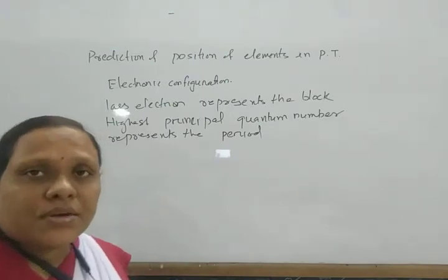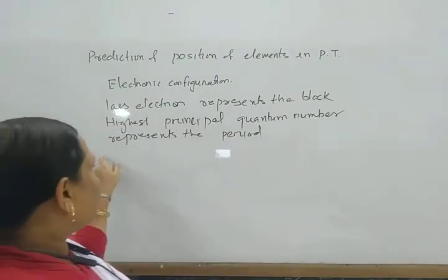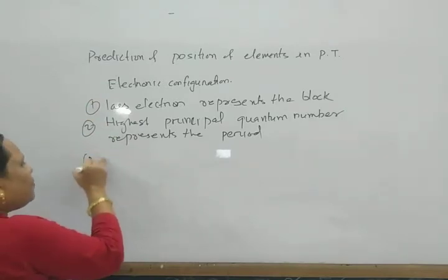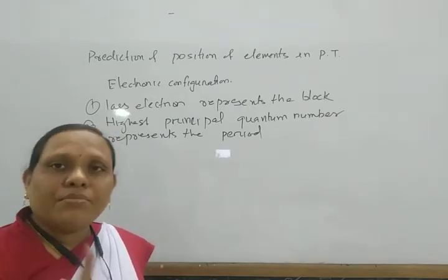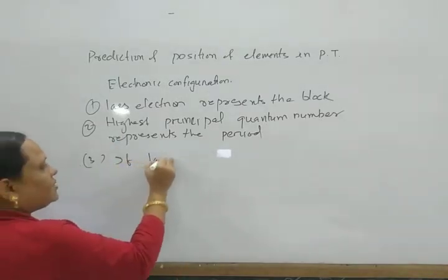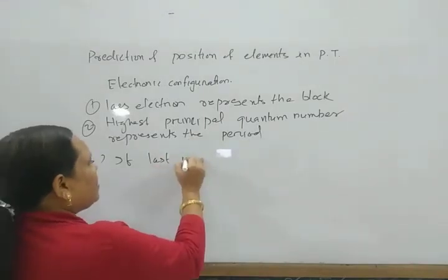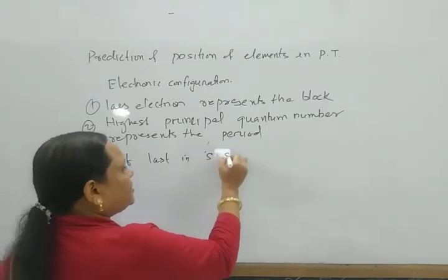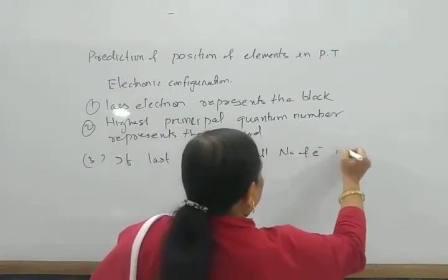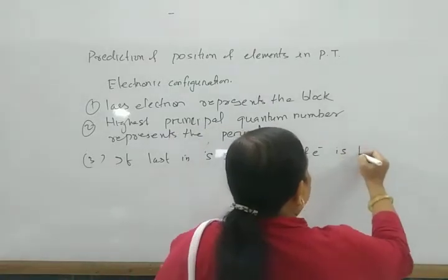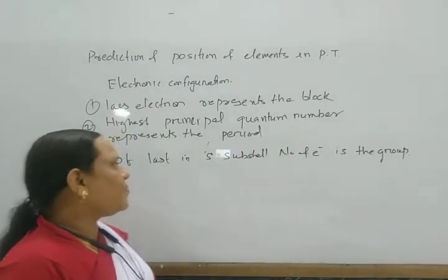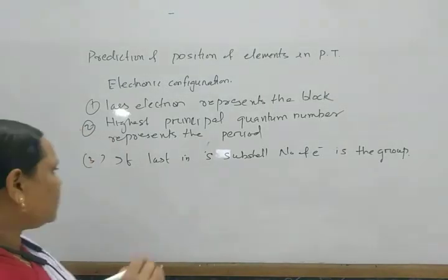To find the group: if the last electron is in the s subshell, the number of electrons in s equals the group number. If there is 1 electron, the group is 1; if 2 electrons, the group is 2.